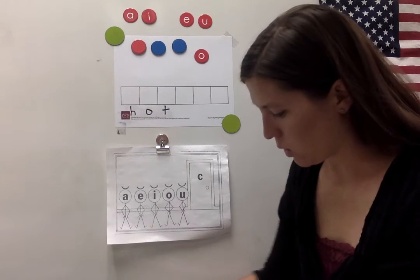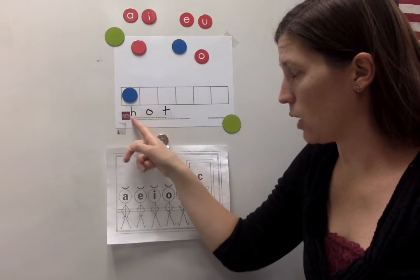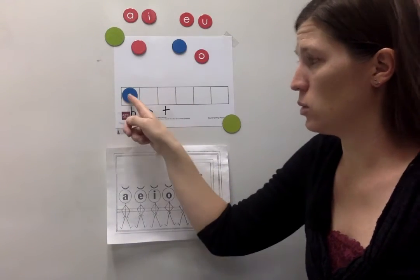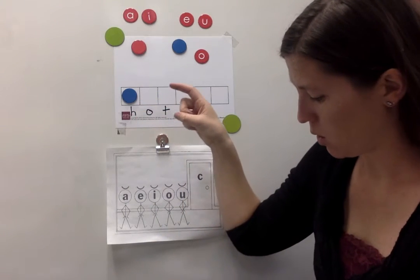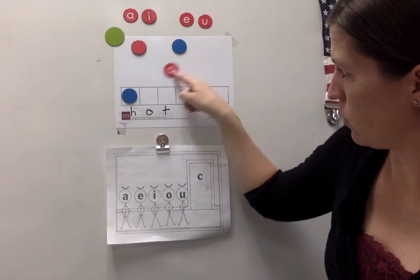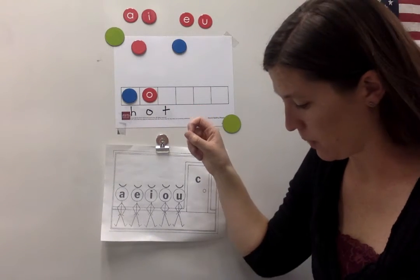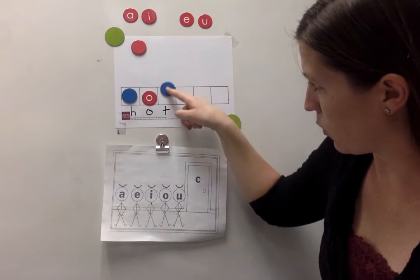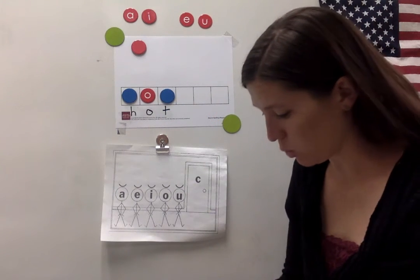I'm going to use the blue chip for H because I know H is not a vowel, so it's a consonant. That's why I'm using blue. I'm going to use the red O chip for O because I know O is a vowel, so I'll use the spelling chip. And I'll use a blue chip for the T because T is not a vowel. It's a consonant. That's why I'm using the blue chip.